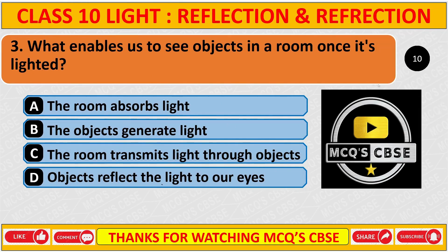What enables us to see objects in a room once it is lighted? The correct answer is D: objects reflect the light through our eyes.